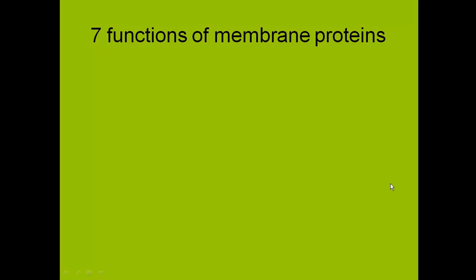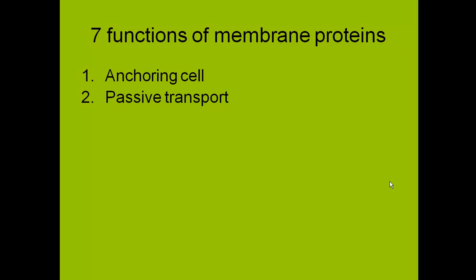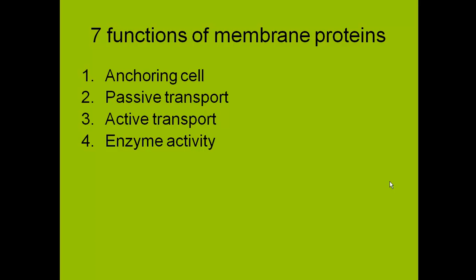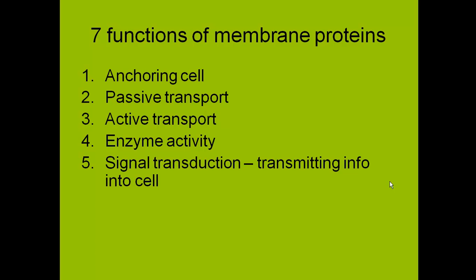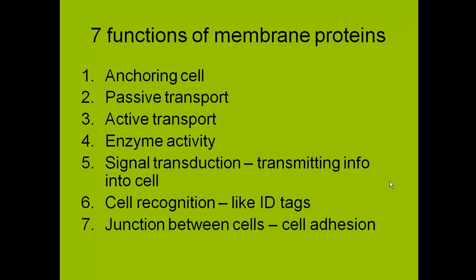There are seven functions of membrane proteins. Number one, they anchor the cell. Two, passive transport, which we'll get into. Three, active transport, which is covered in the next podcast. Four, they can be enzymes. Five, signaling into the cell. Six, cell recognition — recognizing foreign cells or foreign objects. And seven, junctions between cells, which means cells sticking together.